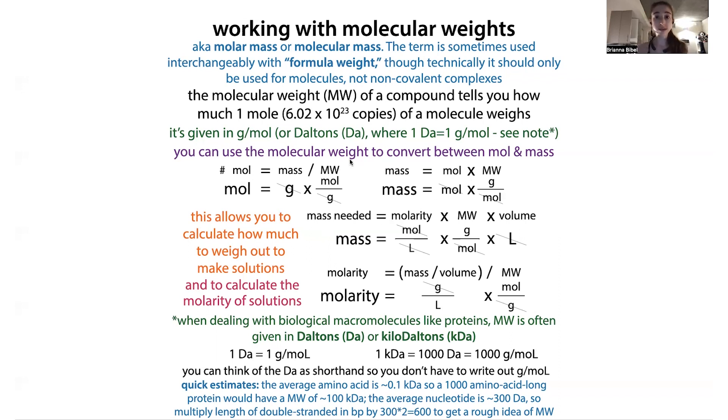We're often using molecular weights when we're trying to make solutions. So if we want to make a solution of a given volume and a given concentration, where that concentration is in terms of molarity, where molarity is moles per liter, what we can do to figure out the mass that we need to weigh out, we can multiply that molarity, the desired molarity, by the molecular weight, by the volume.